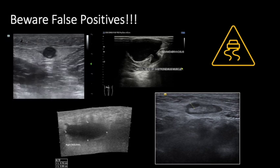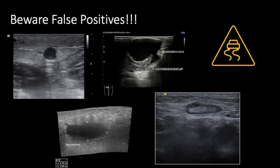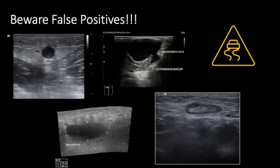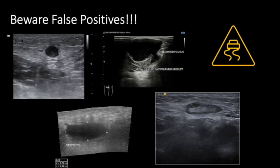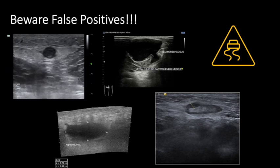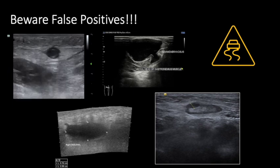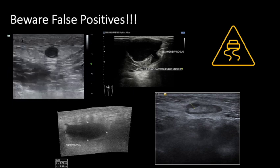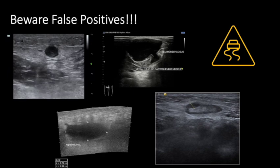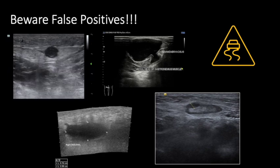Lastly, the bottom right picture shows a lymph node, with the typical architecture of a hypoechoic cortex and a hyper- or isoechoic hilum on the inside. Remember that lymphatic structures often run near vessels and can be mistaken for DVTs. However, following the extended compression ultrasound protocol discussed in this lecture should help you avoid being tripped up by these mimickers.